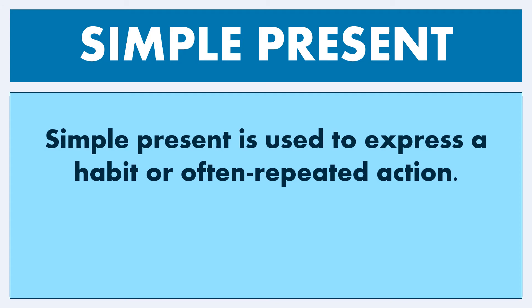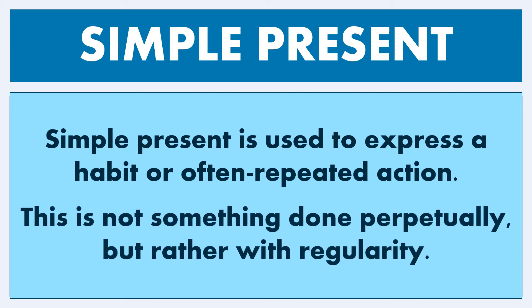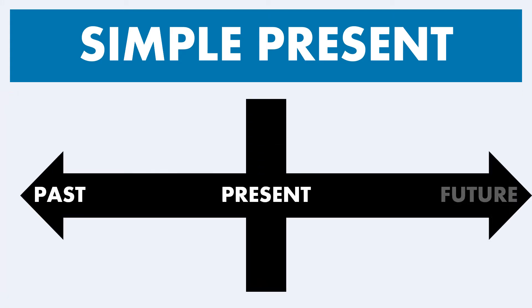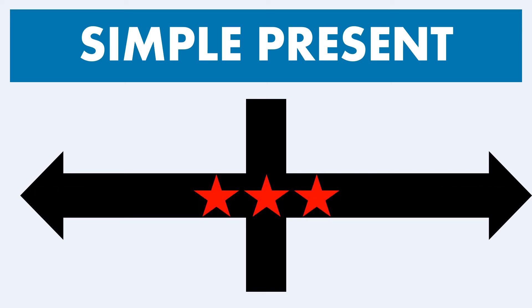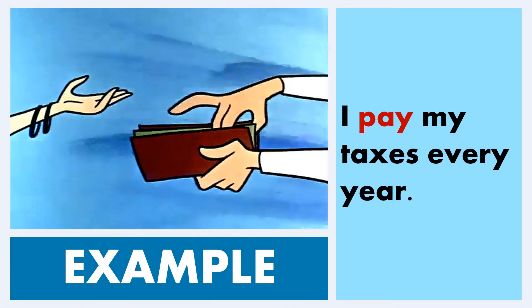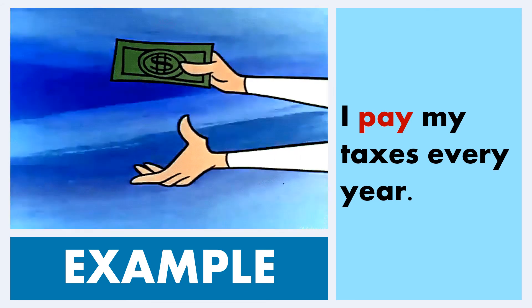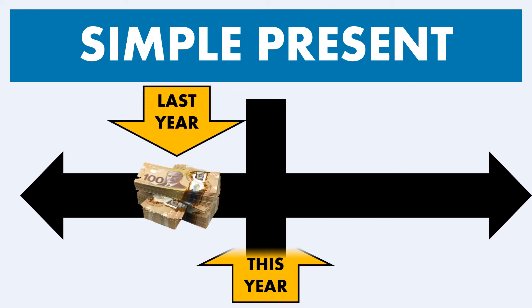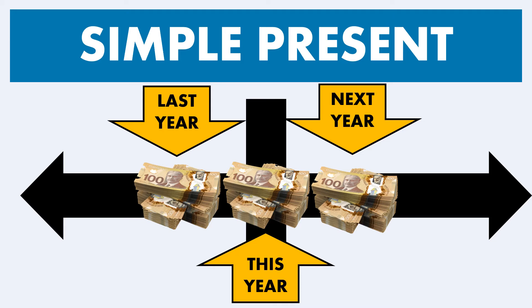Let's move on to simple present. This is used to express a habit or often repeated action — not something done perpetually, but rather with regularity. What to look for: a standard verb form. On the timeline, simple present is something done with regularity: you've done it in the past, you do it now, and you will do it in the future. For example: 'I pay my taxes every year.' This is done with regularity — last year, this year, next year. Taxes, taxes, taxes.